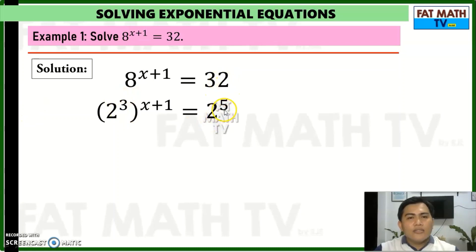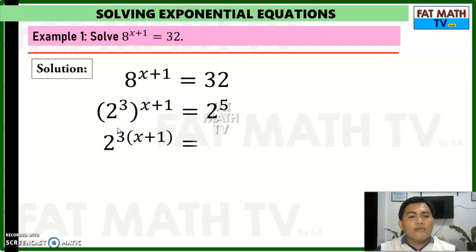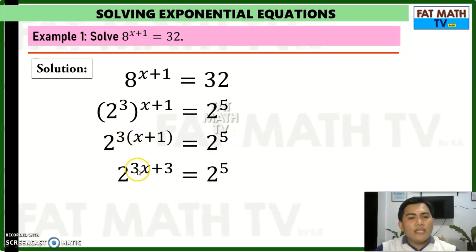We can write 8 as 2 cubed and 32 as 2 raised to 5. Using the properties of exponents, when raising a power to another exponent we multiply the exponents. So we have 2 raised to 3 times (x plus 1) equals 2 raised to 5. Then 3 times (x plus 1) gives us 3x plus 3.